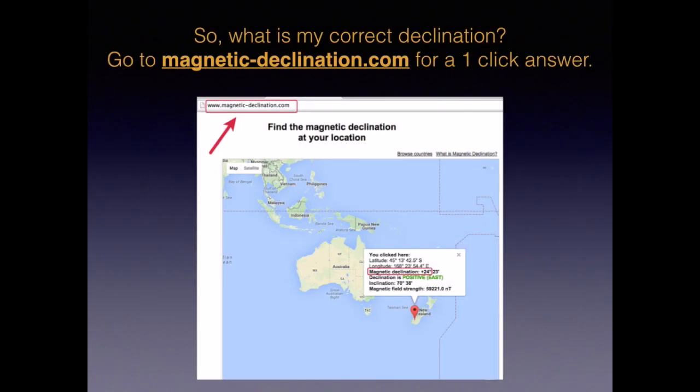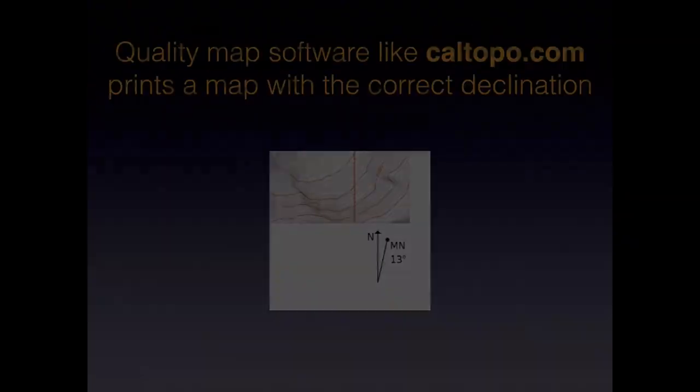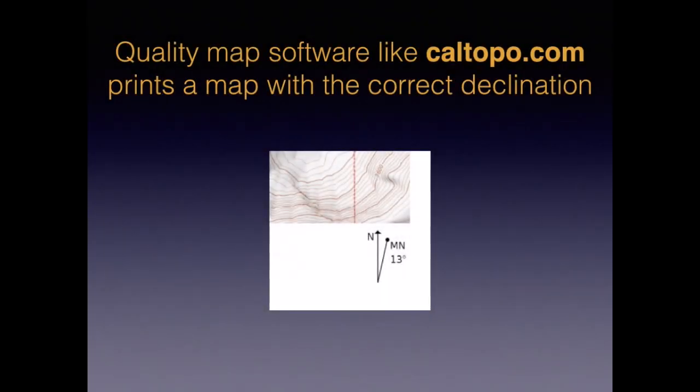It's easy to find the right declination. Go to magneticdeclination.com — one click on the Google map shows you the current declination for any location on Earth. Also, if you print a map with good map software such as caltopo.com, you'll always get a map with the correct declination.